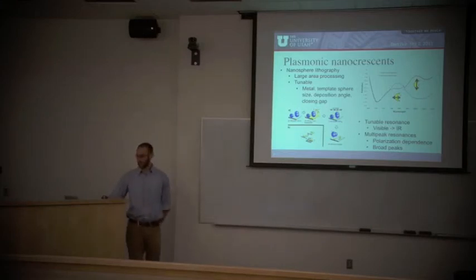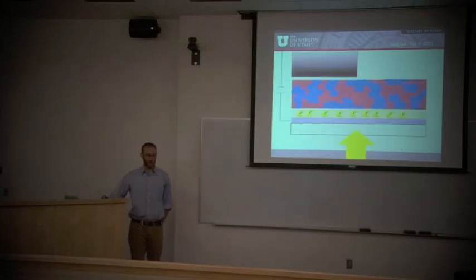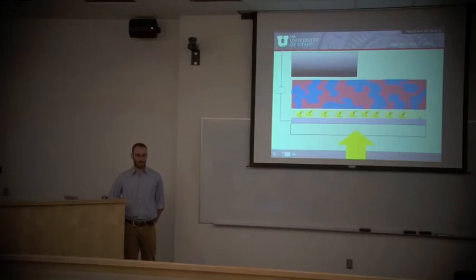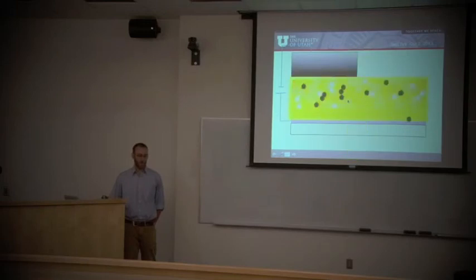Essentially what I want to see is if I put these nano crescents on top of my anode, right below my active layer, this light should concentrate to within the active layer, and that helps me create more charges, and I can create a larger current. That's the goal.